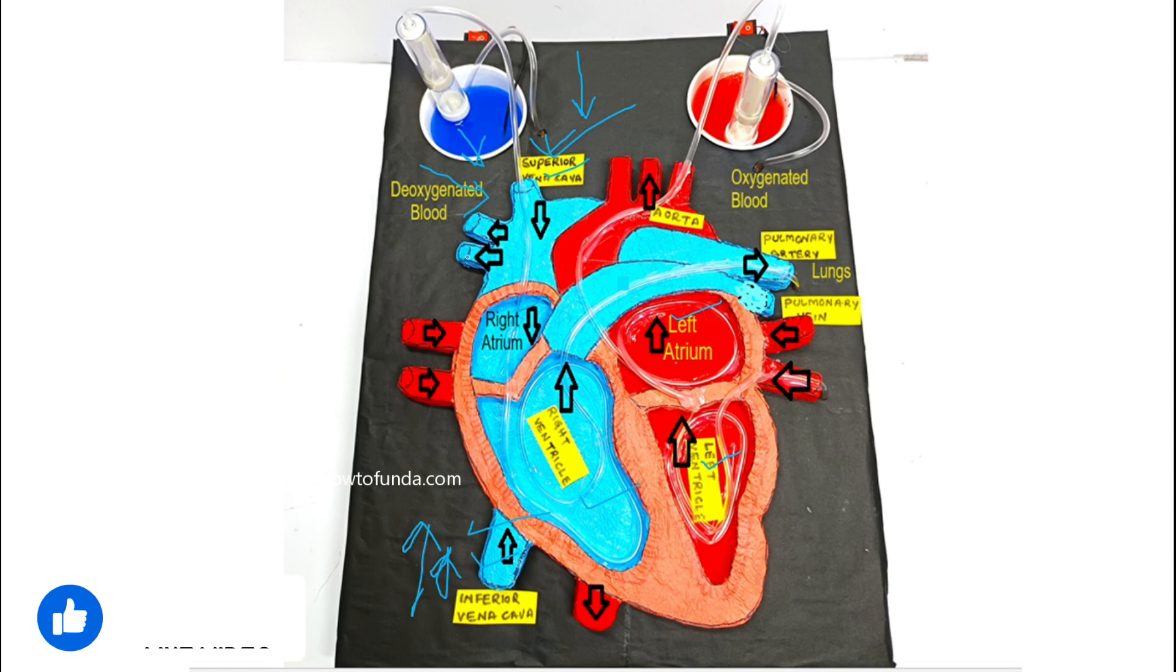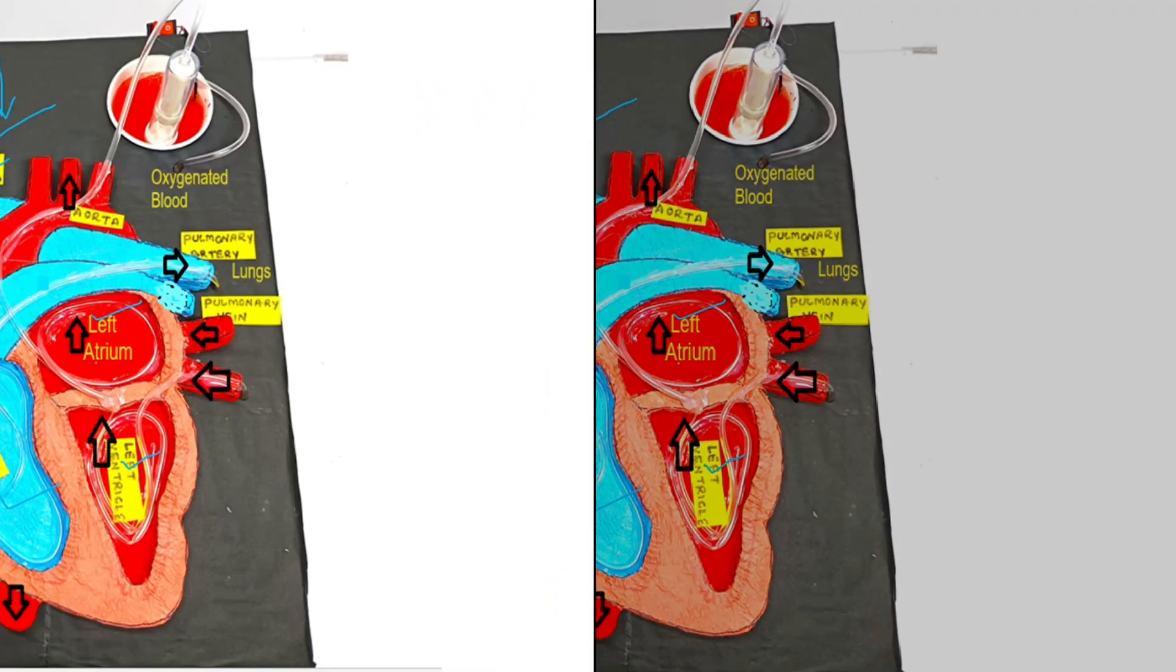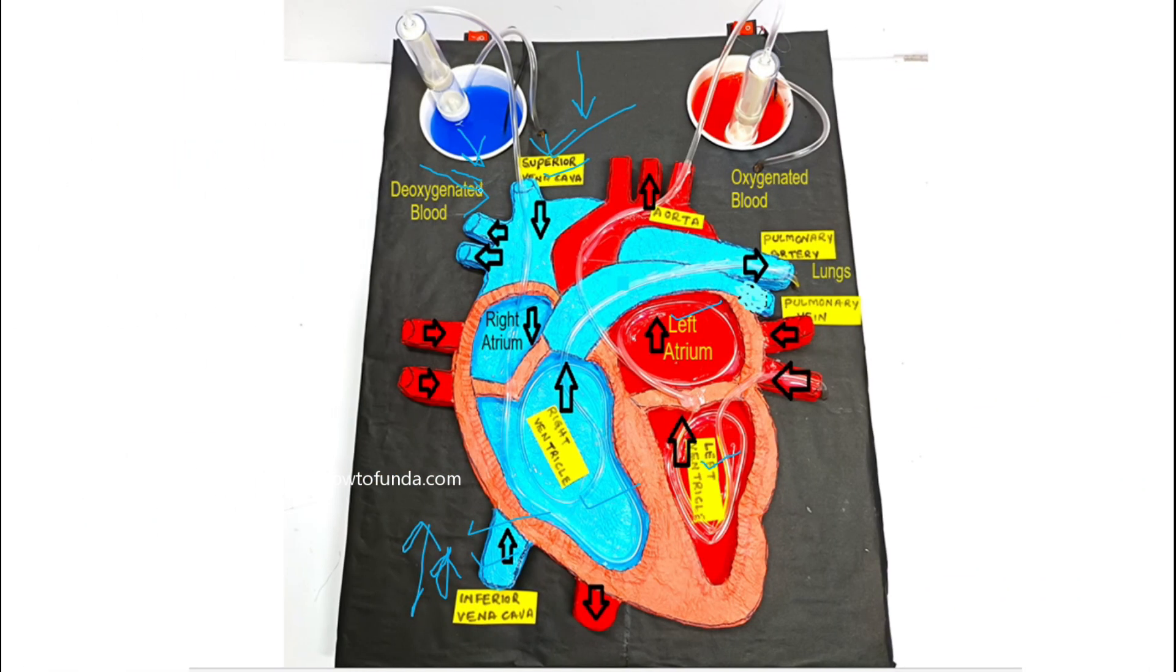Now we understood what is the important structure of a heart. Now we will understand how the deoxygenated blood works. The left part which is blue in color, which is deoxygenated blood.